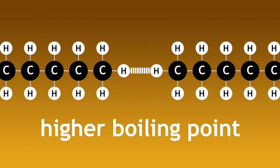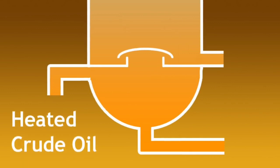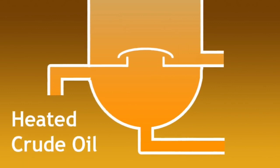Now we understand how chain length is related to the boiling point of a molecule. Let us look at how this method works. As you can see, crude oil is heated up to a high temperature outside of the fractionated column. The hot crude oil, now mostly in vapor form, is pumped into the column.